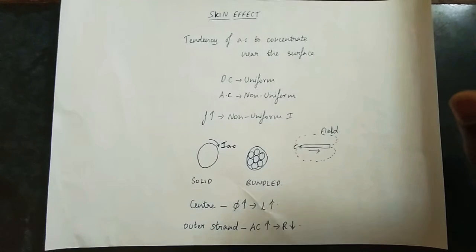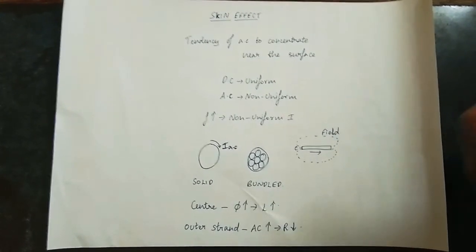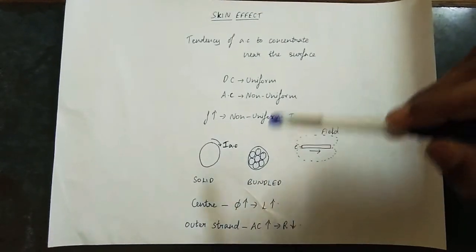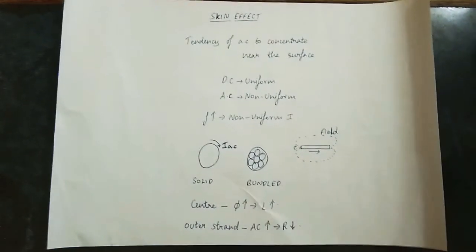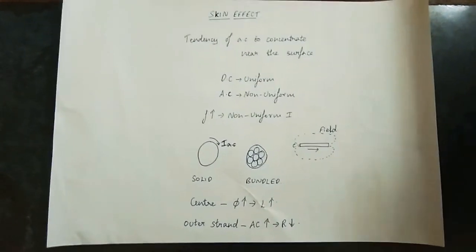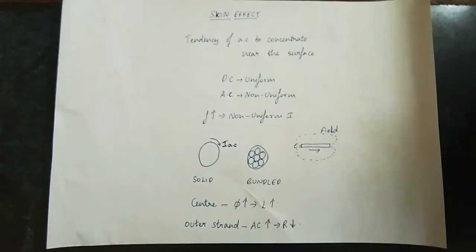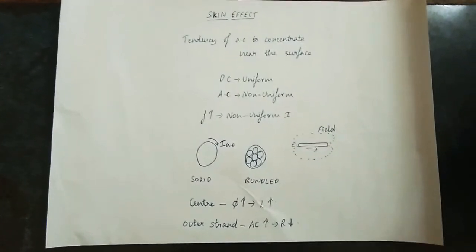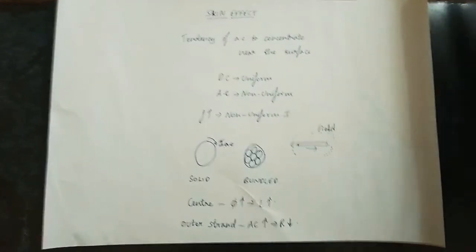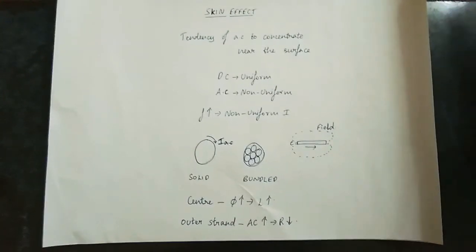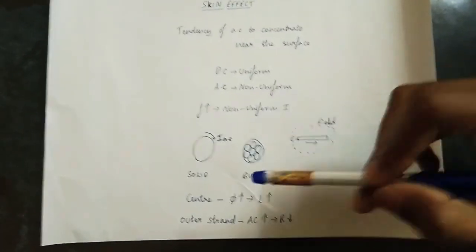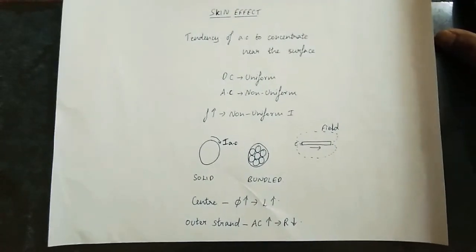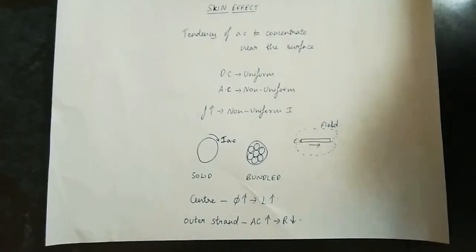The current is limited by AC flux linkage. This is limited by flux linkage. The flux linkage in the inner part causes the inductance to be high, and you have to reduce it. The current density is affected by this. Here is the central flux. Inductance is a matter of inductance.